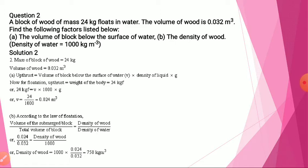We don't know the volume of block below the surface of water, but according to the condition of flotation, upthrust should equal the weight of the body, which is 24 kgf. From this we can find the volume of the submerged block, that is 0.024. Now we have total volume of block, we know density of water, so we can find density of wood — that is 750 kilograms per meter cube.